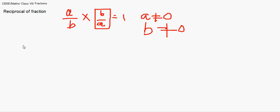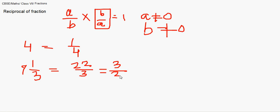So if I am given 4, the reciprocal of 4 will be 1 by 4. If I am given 7 whole 1 by 3, first we convert this into improper fraction that gives us 22 by 3, and the reciprocal then becomes 3 by 22. Or if I am given 1 upon 7 or 1 upon 8 anything, the reciprocal will then be 7. So this is the concept of reciprocal. This will be used while we learn the division.